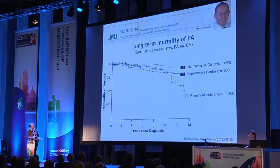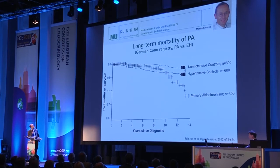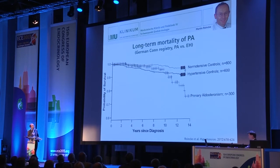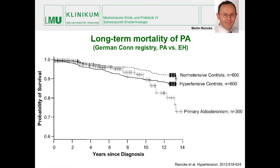If you correctly treat the situation early, these are mortality data from the German Conn registry, spearheaded by Martin Reinke from our institution. There is a comparison between hypertensive controls and primary aldosteronism patients over 14 years of observation. Although mortality goes down at later time points, the differences are not yet significant, but it does make a difference if the disease is diagnosed and treated correctly.